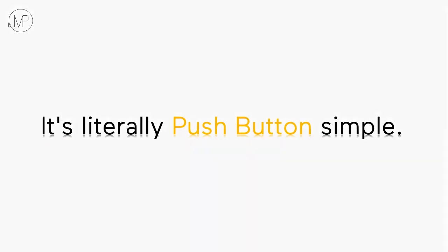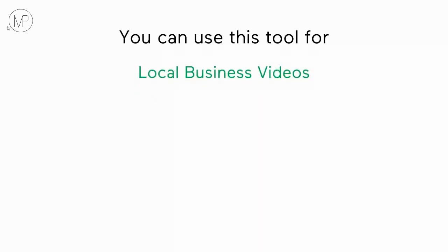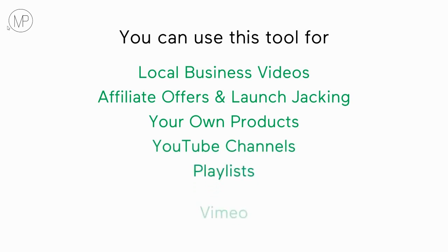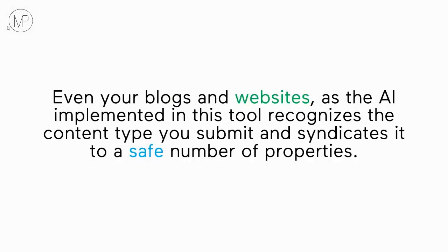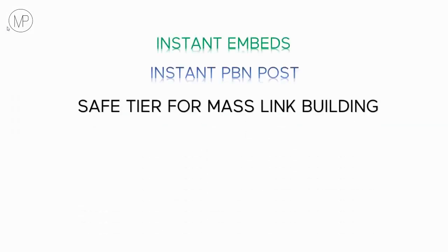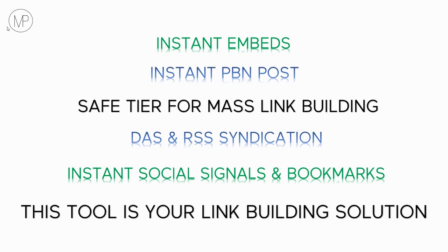High YouTube and Google rankings equal money. When you're able to rank high, you can make money. You can use this tool for local business videos, affiliate offers and launch jacking, your own products, YouTube channels, boosting your playlist, ranking Vimeo videos, e-com product videos, and even your blogs and websites — as the AI implemented in this tool recognizes the content type you submit and syndicates it to a safe number of properties. Instant embeds, instant PBN posts, safe tier mass link building, DAS and RSS syndication, instant social signals and bookmarks — this tool is your complete link building solution.